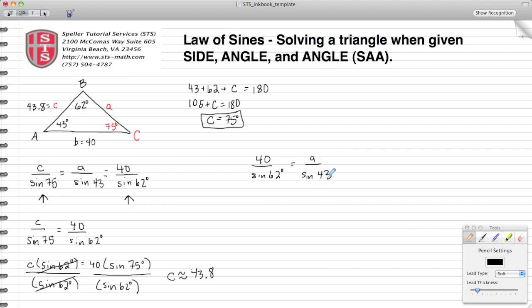Set that equal to a over sine 43 degrees. Again, I've got a proportion here so I can cross multiply, so I'm left with a times sine of 62 degrees is equal to 40 times the sine of 43 degrees.